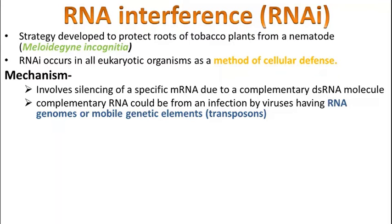This silencing is achieved using a double-stranded RNA. Complementary RNA can be formed from an infection by a virus having an RNA genome, or from mobile genetic elements such as transposons.